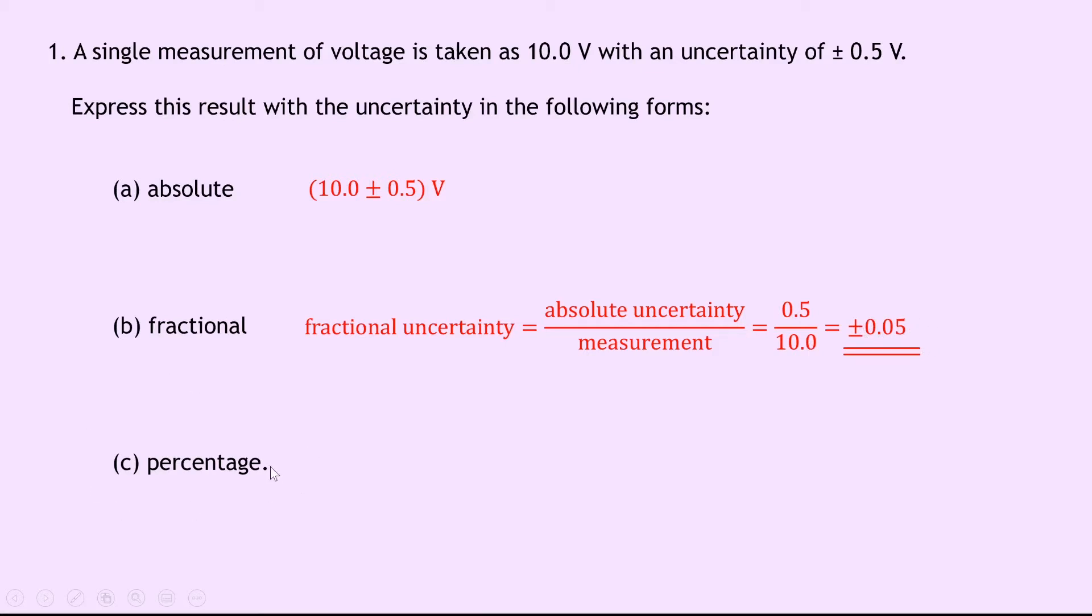And lastly part C, it says percentage form. So remember to get a percentage uncertainty, we take our absolute uncertainty and divide by the measurement, then times by 100. So we take our 0.5 divided by 10.0 times 100, and this gives an answer of plus or minus 5%. If you then wanted to write the measurement of 10.0 volts with the percentage uncertainty, it would look like this. So 10.0 volts plus or minus 5%.